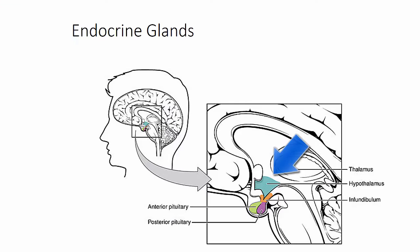The hypothalamus lies deep in the brain along the walls and floor of the third ventricle. The hypothalamus communicates closely with the body and with higher brain centers. After gathering information, the hypothalamus sends instructions to the pituitary — both the anterior pituitary and the posterior pituitary.